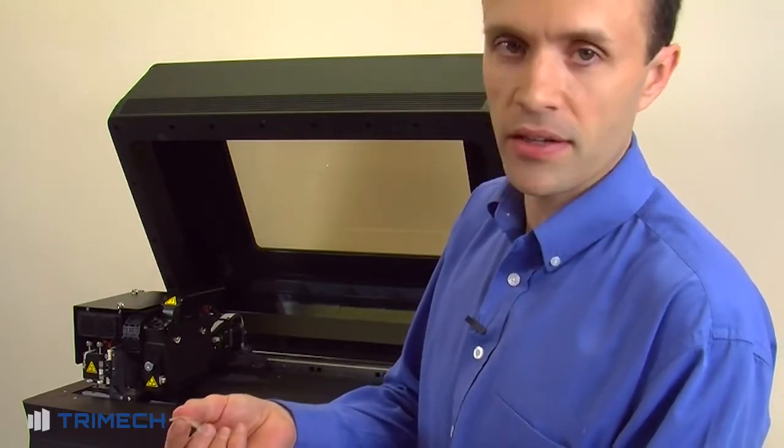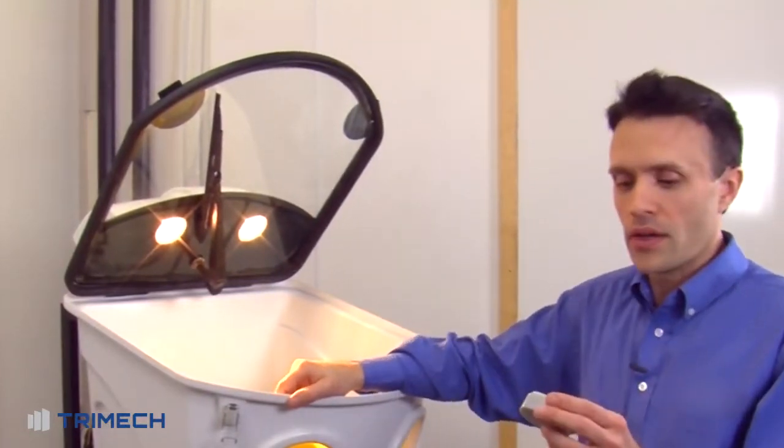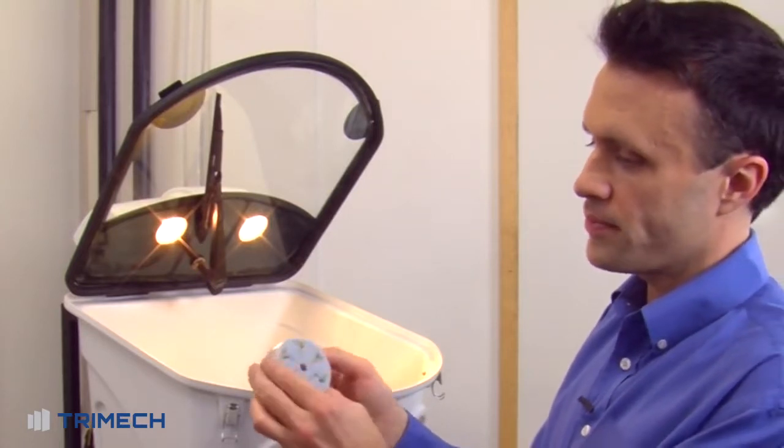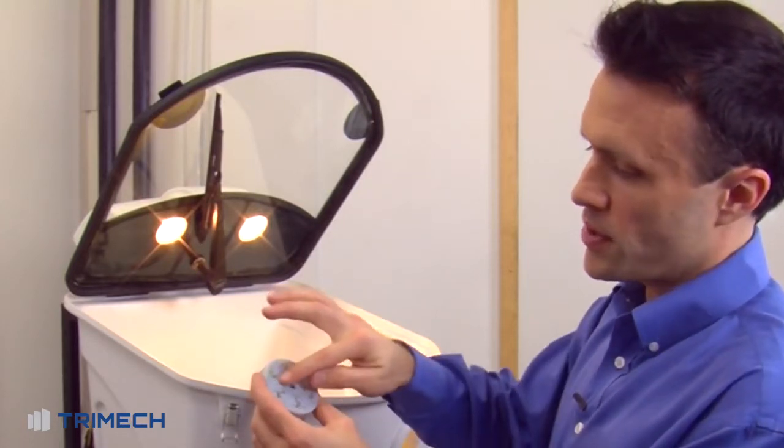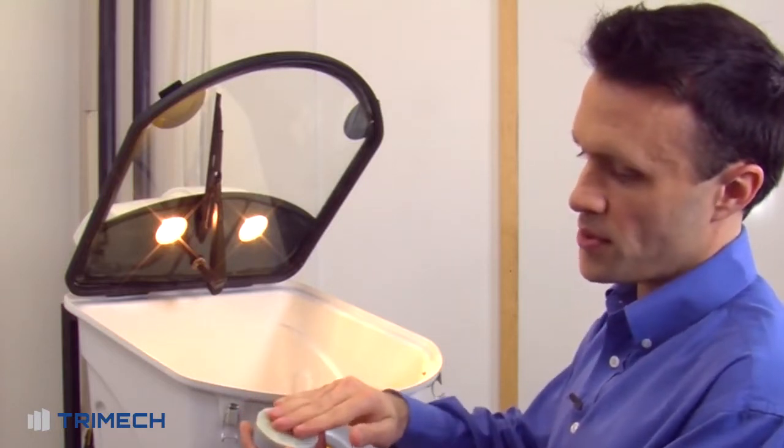Okay, so we have our part done here. Now you can see that the part still has all of the support materials still inside of it. We have a lot of support material inside these little cracks and grooves, and we have the support material that was also on the bottom that kept the part down on the tray.